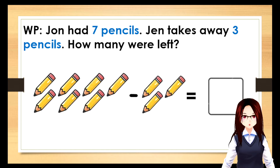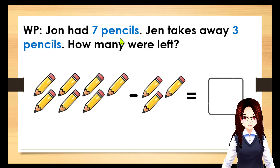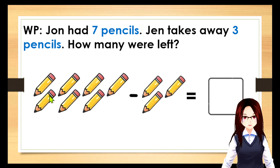Let's have our first word problem. Let's read: John had seven pencils. Jen takes away three pencils. How many were left? So, here you have seven pencils: one, two, three, four, five, six, seven.